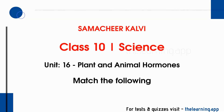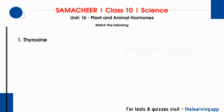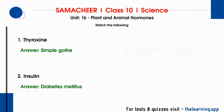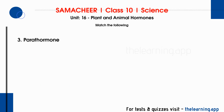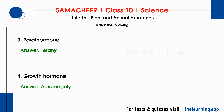Next, match the following. Column A has hormone names and Column B has their dysfunctions. First: Thyroxine - simple goiter. Second: Insulin - less secretion leads to diabetes mellitus. Third: Parathormone - tetany, which is muscle spasm. Fourth: Growth hormone - acromegaly, which is excess secretion of growth hormone in adults causing abnormal size of body parts.